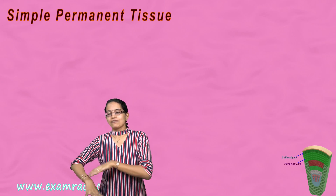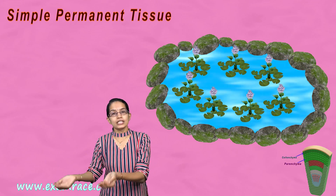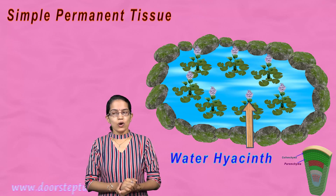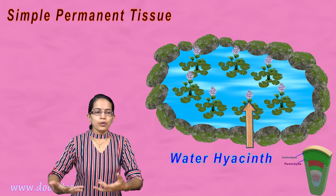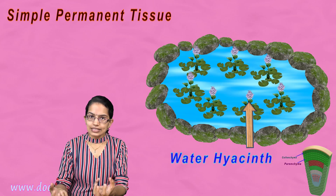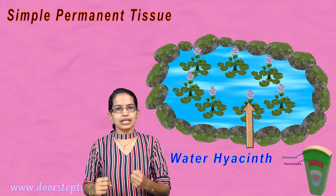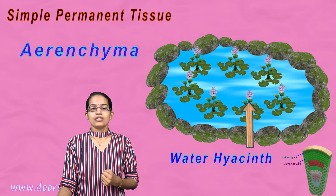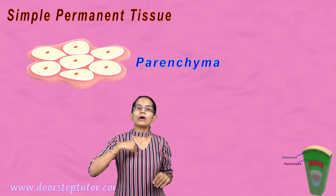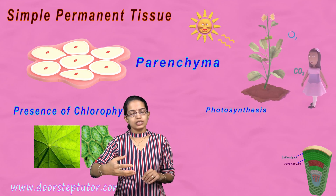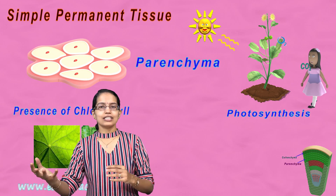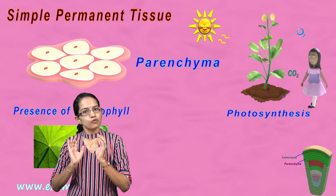If there is a plant which is floating, buoyancy is required. A good example is water hyacinth, commonly seen in lake bodies. This buoyancy helps the plant float because of the air cavities that are seen. Plants which have these air cavities are known as aerenchyma. So parenchyma has two specialties: one involves chlorophyll and photosynthesis, called chlorenchyma; the other, called aerenchyma, has air cavities for buoyancy and helps aquatic plants float.